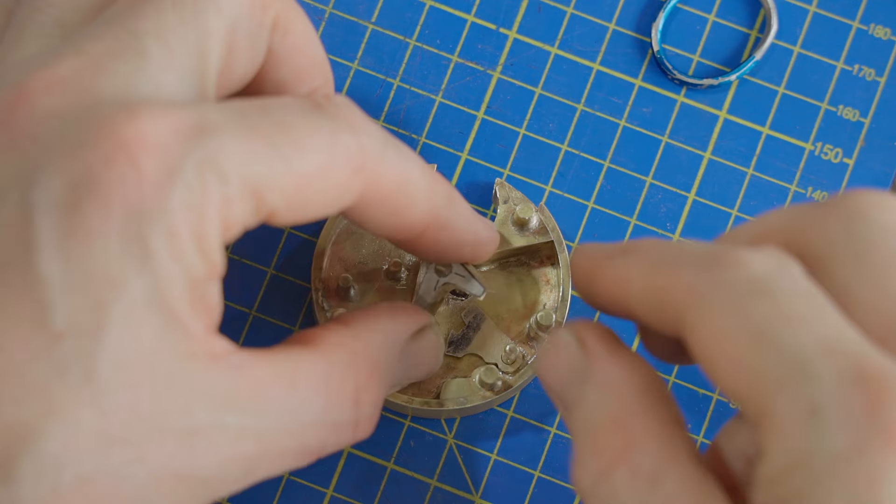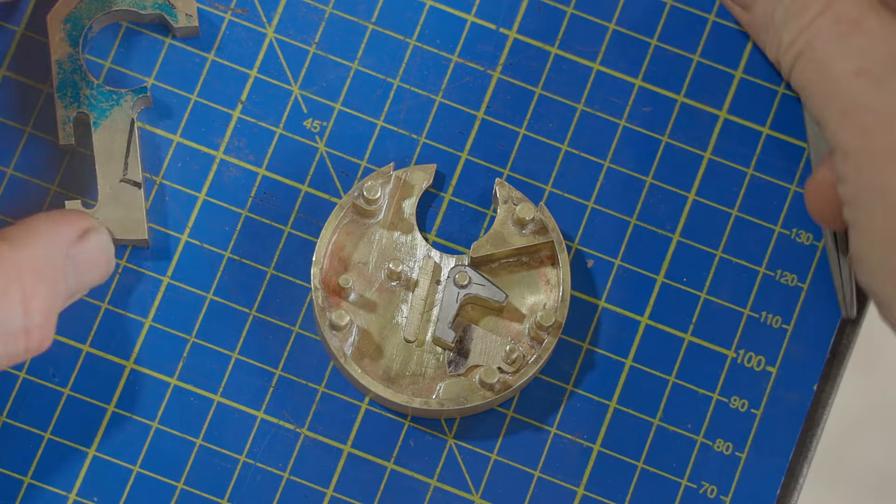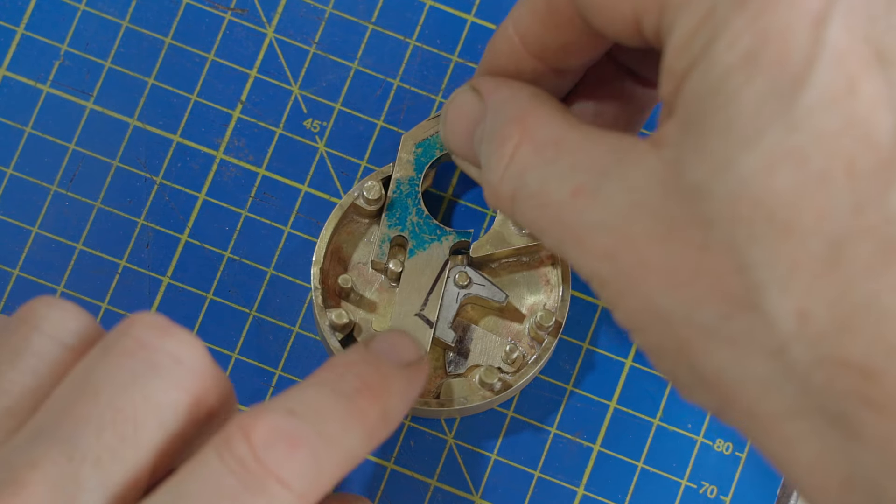When the bolt enters the gate to the required depth, the bolt should leave enough room behind it for the shackle to be fitted into the case.